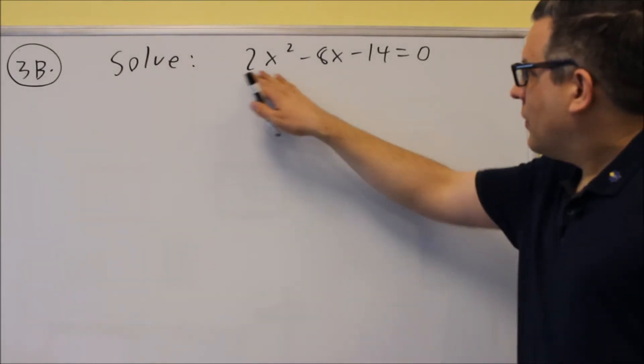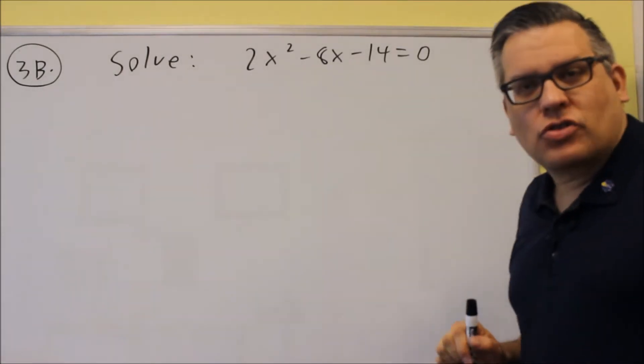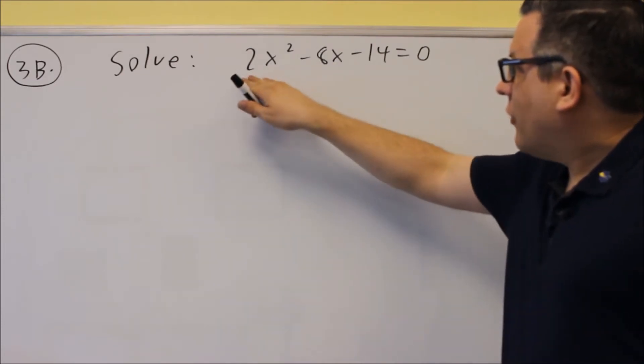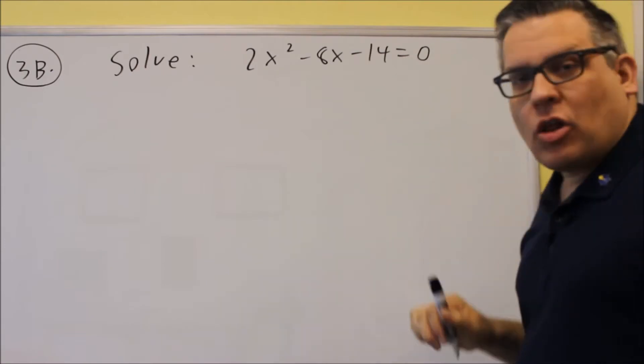Okay, for 3B, we have this. So the first thing you want to look for is there any common factors? Now in this case, I do have a 2 that's common all the way through.